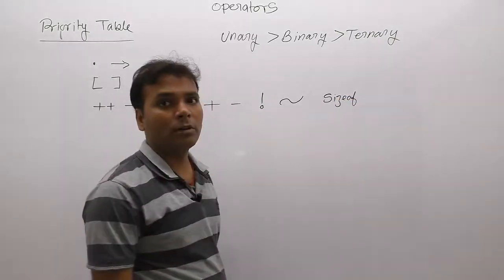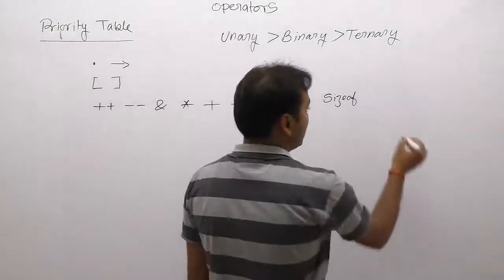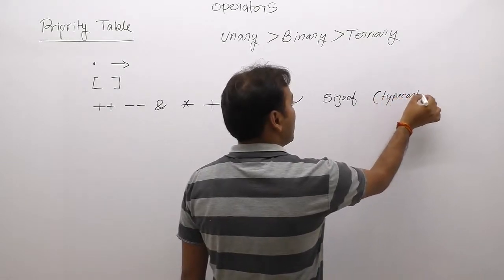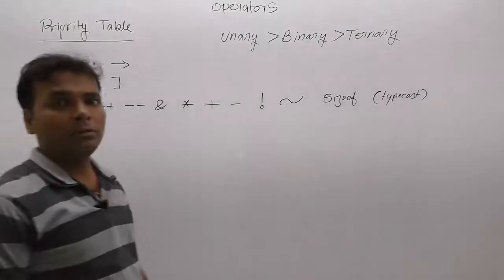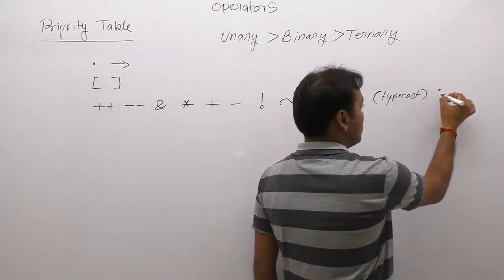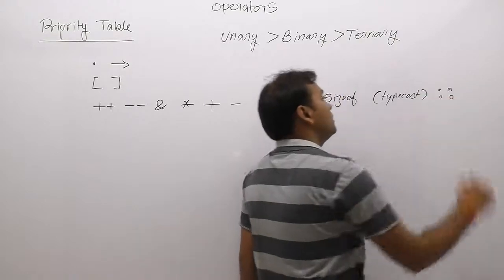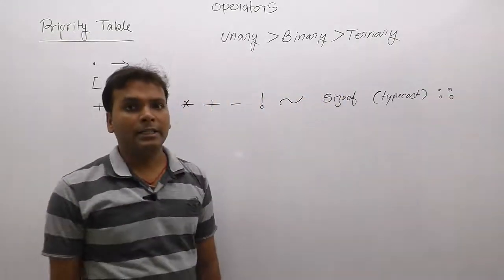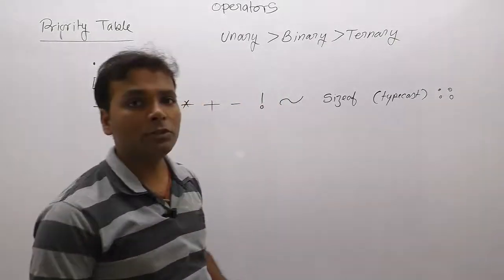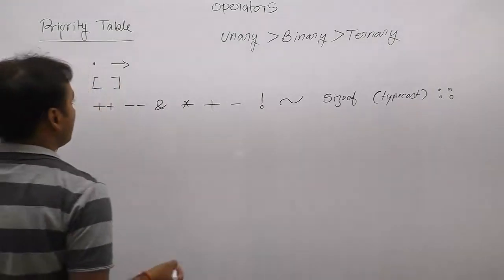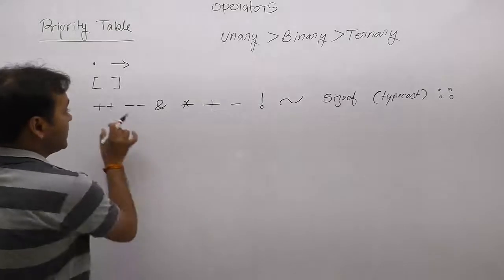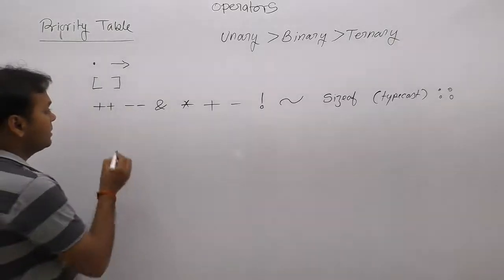sizeof as a keyword is still considered as an operator. Also, type cast operator — these are all unary operators in C. One more case: scope resolution operator, most likely used in C++. In C it may also be used. So the priority order so far: first dot and arrow, next array index, then all unary operators.